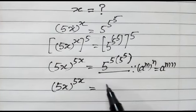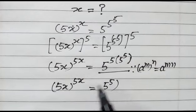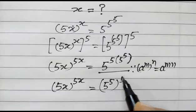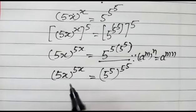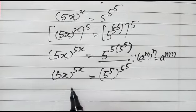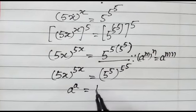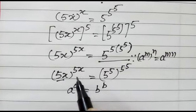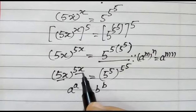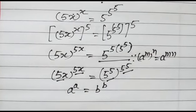We can write the right side as 5 to the power 5, to the power 5, to the power 5. As we know, if a^a = b^b, then a must be equal to b.